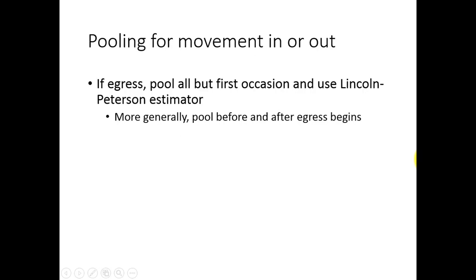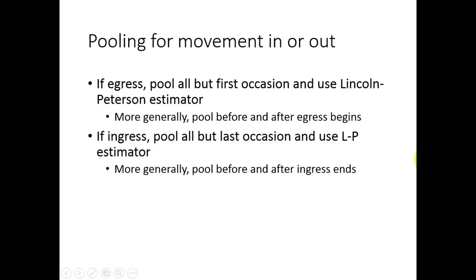Nevertheless, we can often correct bias due to movement by pooling the data into two capture occasions. For movement outside of the study area, we can pool all but the first occasion and then use the two-sample Lincoln-Peterson estimator. In general, we want to pool before and after the egress begins. For movement into the study area, we want to pool all but the last capture occasion and then use the two-sample Lincoln-Peterson estimator — that is, we want to pool before and after the egress ends.